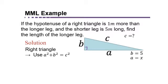Then c is one meter more than the longer leg, so that's going to be x plus one. So we have to plug in what we know: a is x, b is five, and c is x plus one into the relationship a squared plus b squared equals c squared. So we get x squared plus five squared equals the quantity x plus one squared.